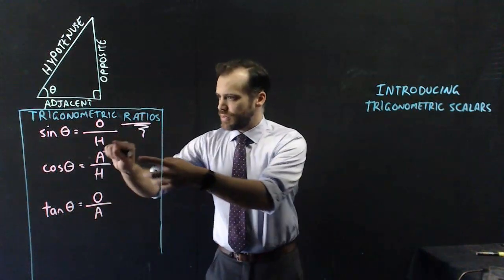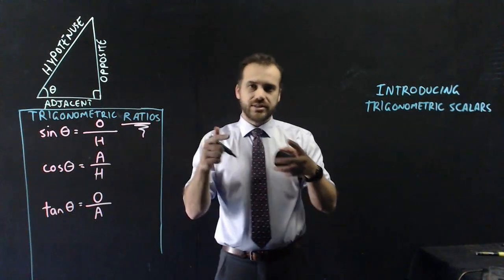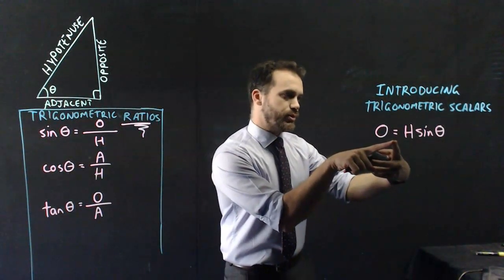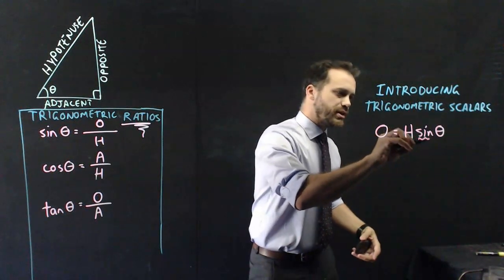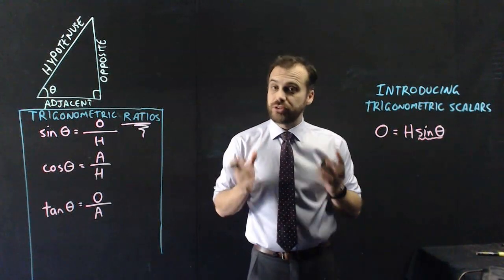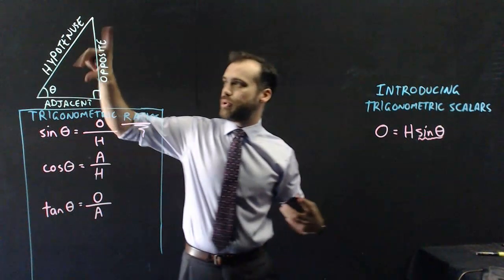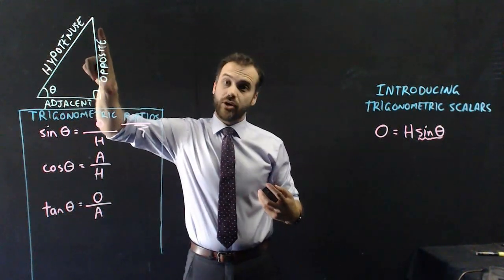Let me show you. I'm going to take the H and I'm going to multiply both sides by H. And that's going to give me a formula that looks like this. Opposite equals hypotenuse times sine theta. Now, sine theta is our trigonometric scalar.